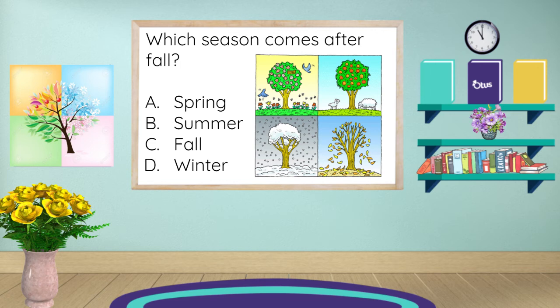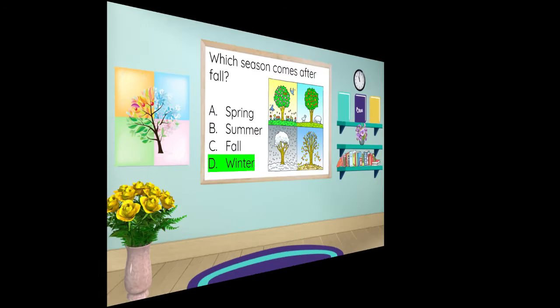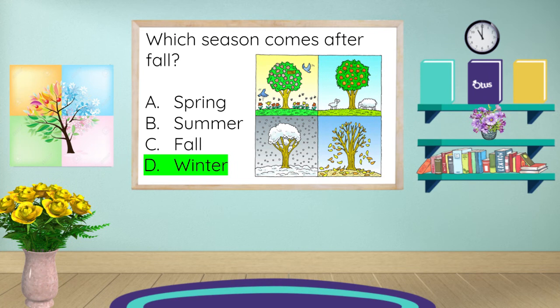Which season comes after fall? Is it A, spring; B, summer; C, fall; or D, winter? Yes, right after the fall season, we have the winter season. That's when all the leaves have already fallen off the trees, and in some places we have very cold temperatures and snow.